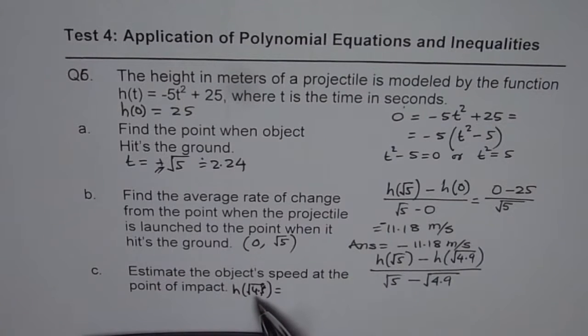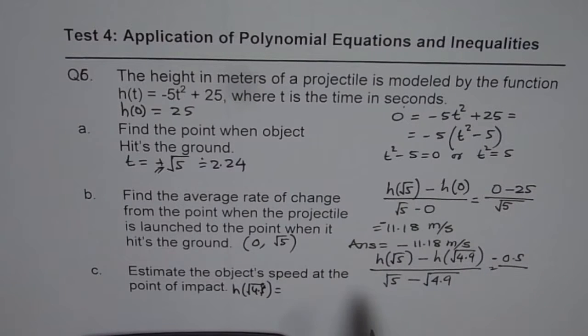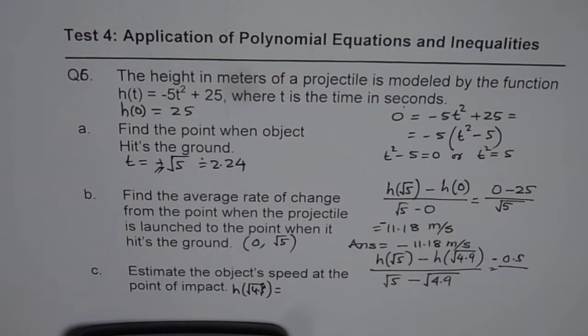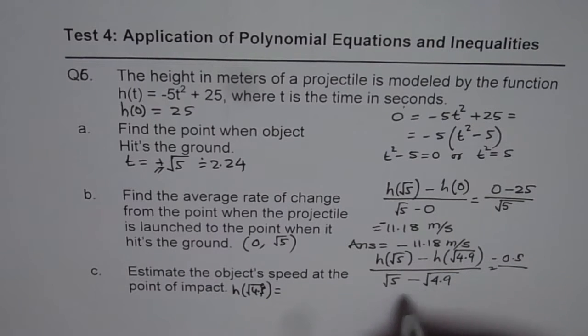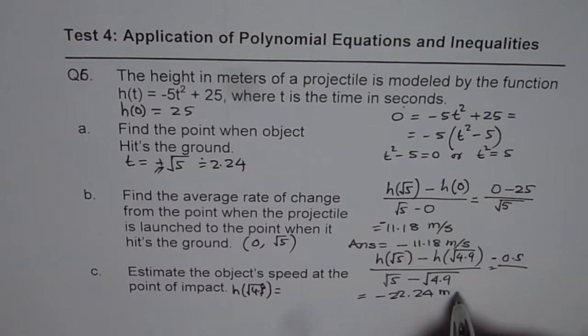25 minus square root of 4.9, okay. So approximately 0.5 divided by, this is negative, since this is 0, 0 minus negative, divided by √5 - √4.9, bracket close, equals to, so we get a decimal value of 22.24. So we can write down this as, so I didn't show the calculations here, but I am writing the result here, which is -22.24 meters per second.